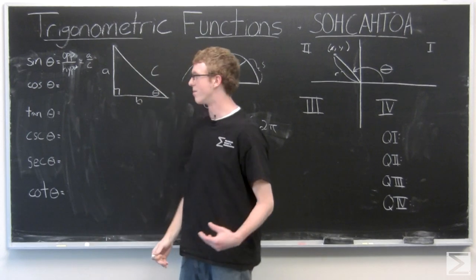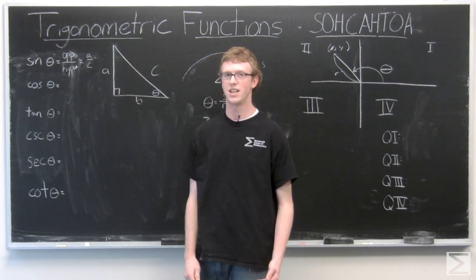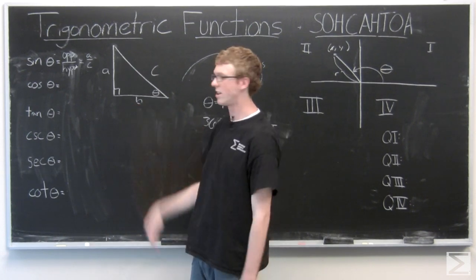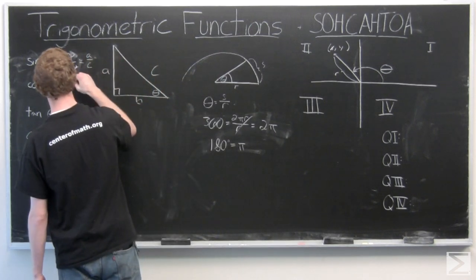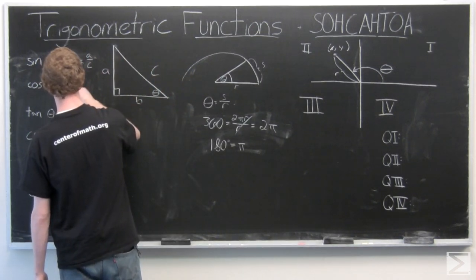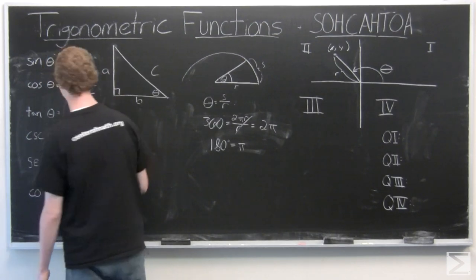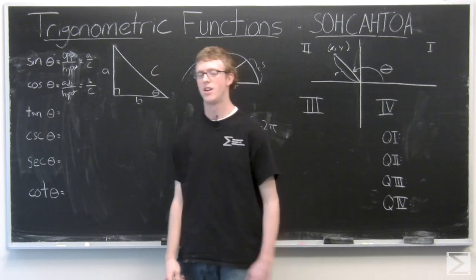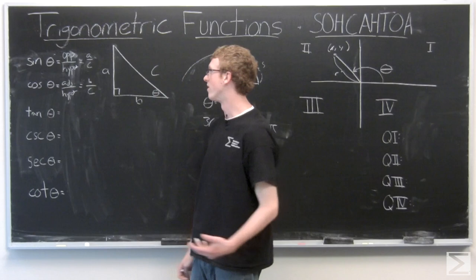Now we do the same thing with cosine. That's the C in SOHCAHTOA, and then the AH is adjacent over hypotenuse. So the adjacent side here is B. Hypotenuse again is C. And then you have the last function tangent of theta. That's the T in SOHCAHTOA, and that's opposite over adjacent.